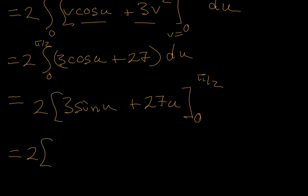And sine of pi over 2 is 1, so that's going to be 3, plus 27 times pi over 2. And if you let u equal 0, you're going to get 0's in both of those terms.